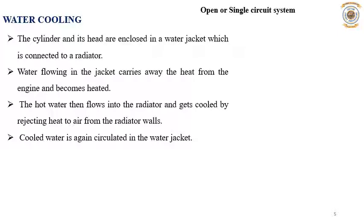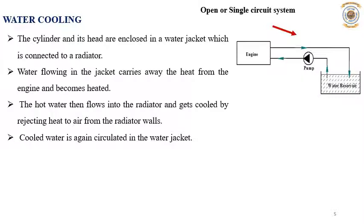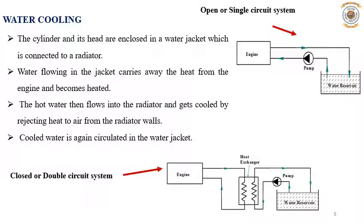There are two types of water cooling systems. The first is the open or single circuit system: water from a reservoir is pumped to the engine and then directly fed back into the water reservoir. The second is the closed or double circuit system: a pump circulates water from a reservoir to a heat exchanger, where it exchanges heat with water coming from the engine. The hot water from the diesel engine gives heat to the secondary circuit water, gets cooled, and then goes back to the engine.